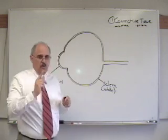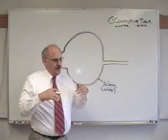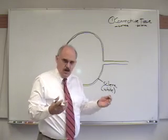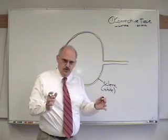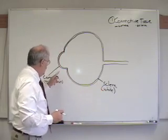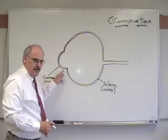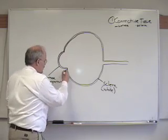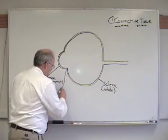But there's one other term here that I want to introduce because you're going to hear it. If you're around ophthalmologists, if you read ophthalmology notes, if you talk to ophthalmologists, if you're around the eye, you're going to hear this term, and I want you to know what it is. And that is where the cornea meets the sclera, where the clear cornea meets the white sclera, there's a junction. And this junction is called the limbus.